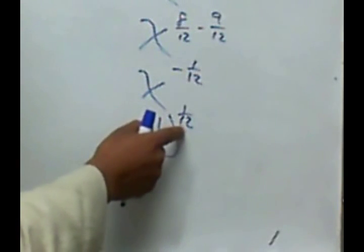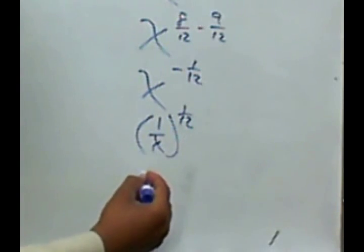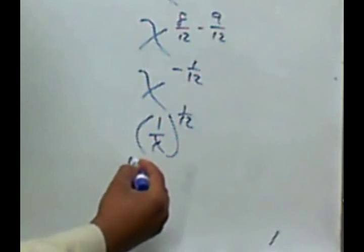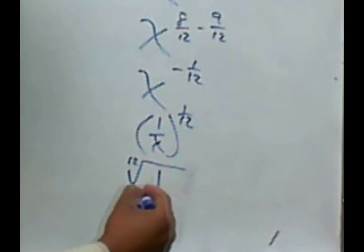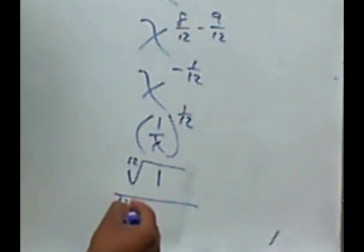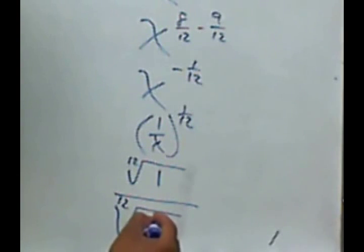And now I'll convert this into a radical. So we have a radical for the 1, the 12th root of 1, all over the 12th root of x.